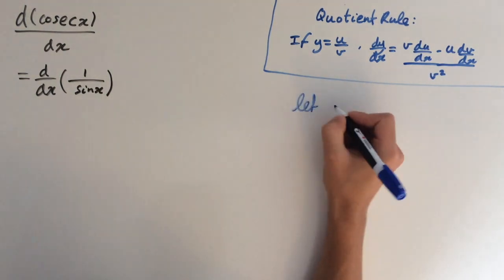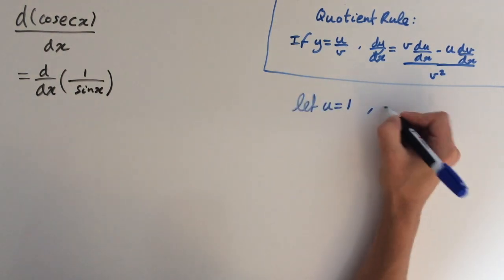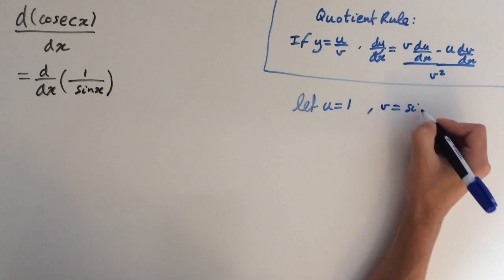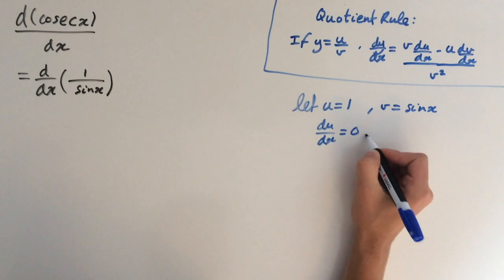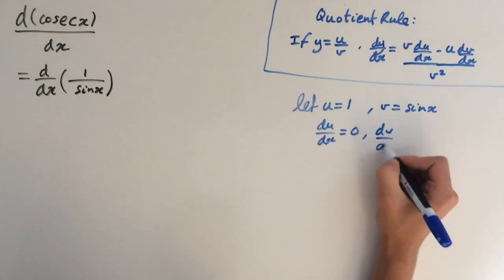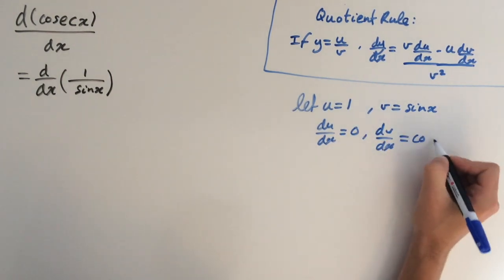So we're going to let u equal 1 and v equal sine of x. So du dx equals 0 and dv dx equals cosine of x.